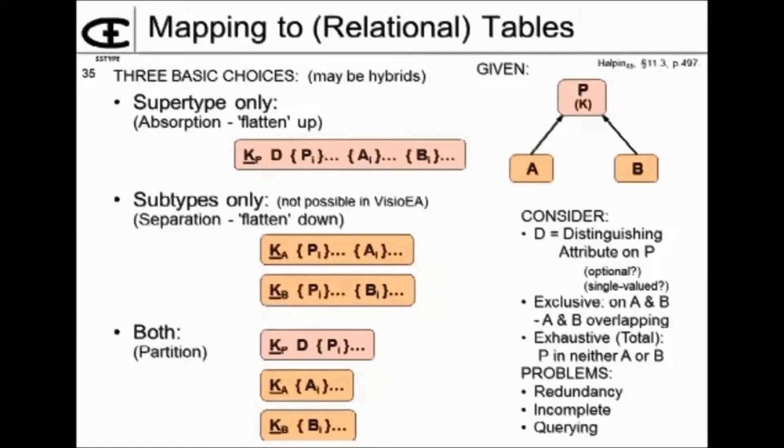If A and B were exclusive, in other words you can't be in both of them, do subtypes only make sense? You would never, if you look at supertypes only, if they're flattening up, if A and B were exclusive, you would never have, if you had some attributes for A, you wouldn't have anything for B. And so there's no particular reason for combining them.